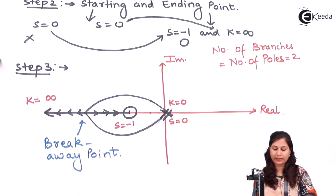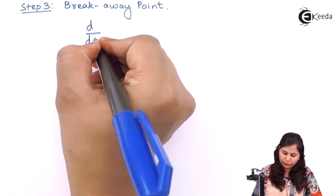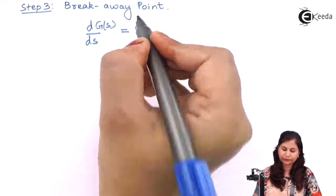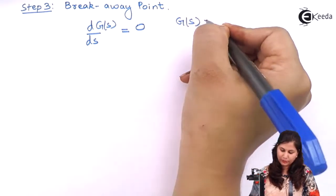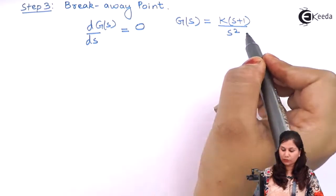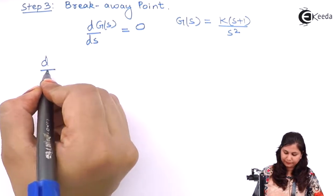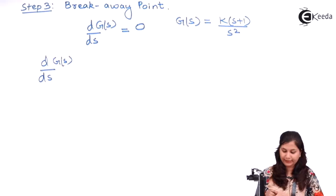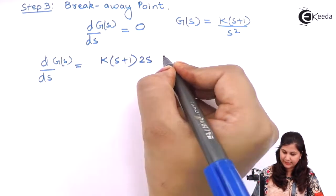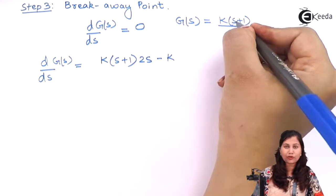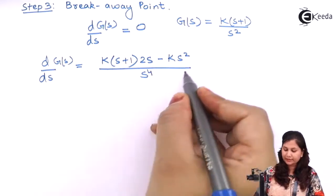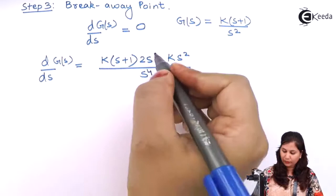Our next step is to find out the breakaway point, since the two branches from the two poles at the origin coincide at one point. To find the breakaway point, we differentiate the open loop transfer function G(s) with respect to s and equate it to zero. Our G(s) = k(s+1)/s², so we differentiate this expression with respect to s and equate it to zero.